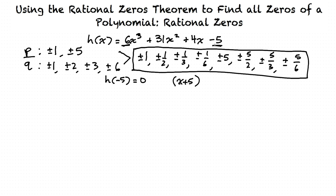This particular polynomial could not be factored using traditional factoring methods. So because we used the Rational Zeros Theorem, we're able to get x plus 5 as one factor, and then we can use synthetic division to simplify this polynomial and figure out the other factors. To do this, we take negative 5, box it in, and then write the coefficients of h of x, which are 6, 31, 4, and negative 5.